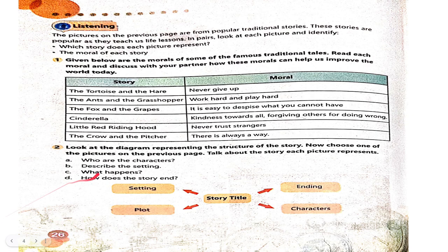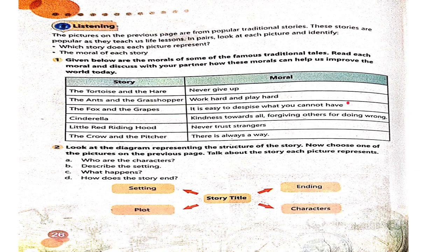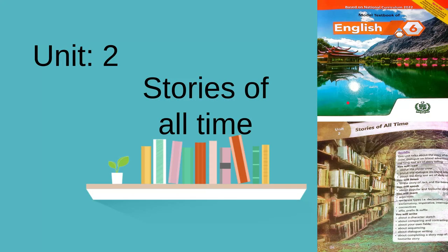Now we have to tell how the story ends. The ending of the story is: the hare woke up and realised that he lost the race. The moral of the story is: slow and steady wins the race. Thank you for watching — like, subscribe and share with your family and friends. Bye, see you in the next video.